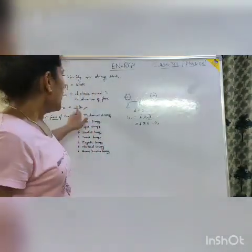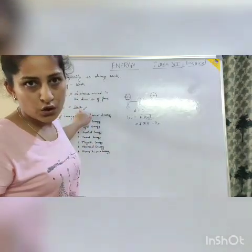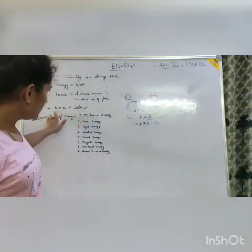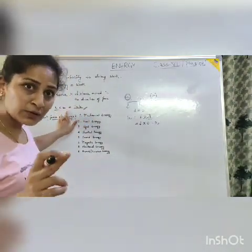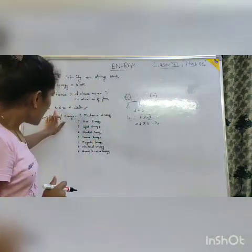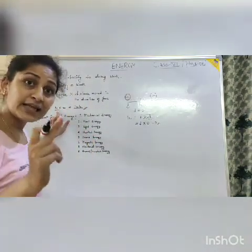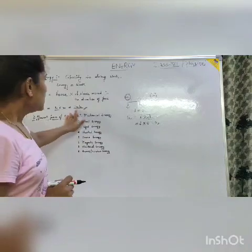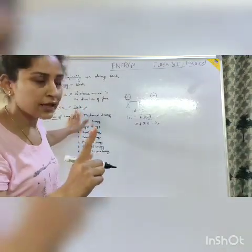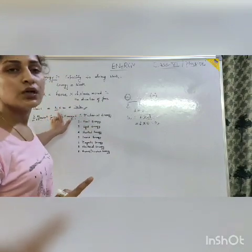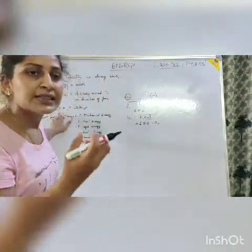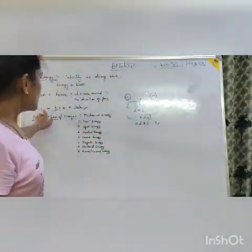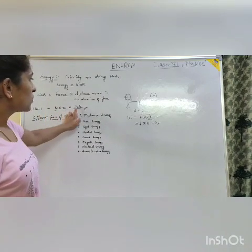According to your book, how can you define one Joule? One Joule is defined as: when you apply a one Newton force on a given object and the body moves a distance of one meter. That's why you can say the work done is one Joule. So the unit of work is Newton into meter, which equals Joule.